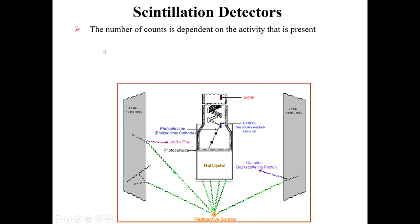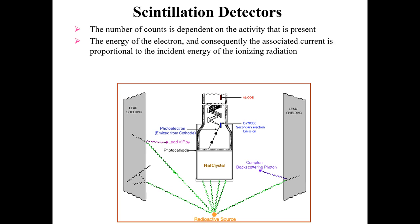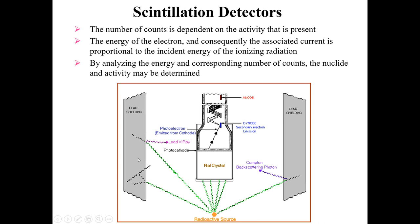The number of counts produced is dependent on the activity present. The energy of the electrons produced, and consequently the associated current, is proportional to the incident energy of the ionizing radiations. That is, the current produced is proportional to the energy carried by the incoming radiation — in this case falling on the sodium iodide crystal.